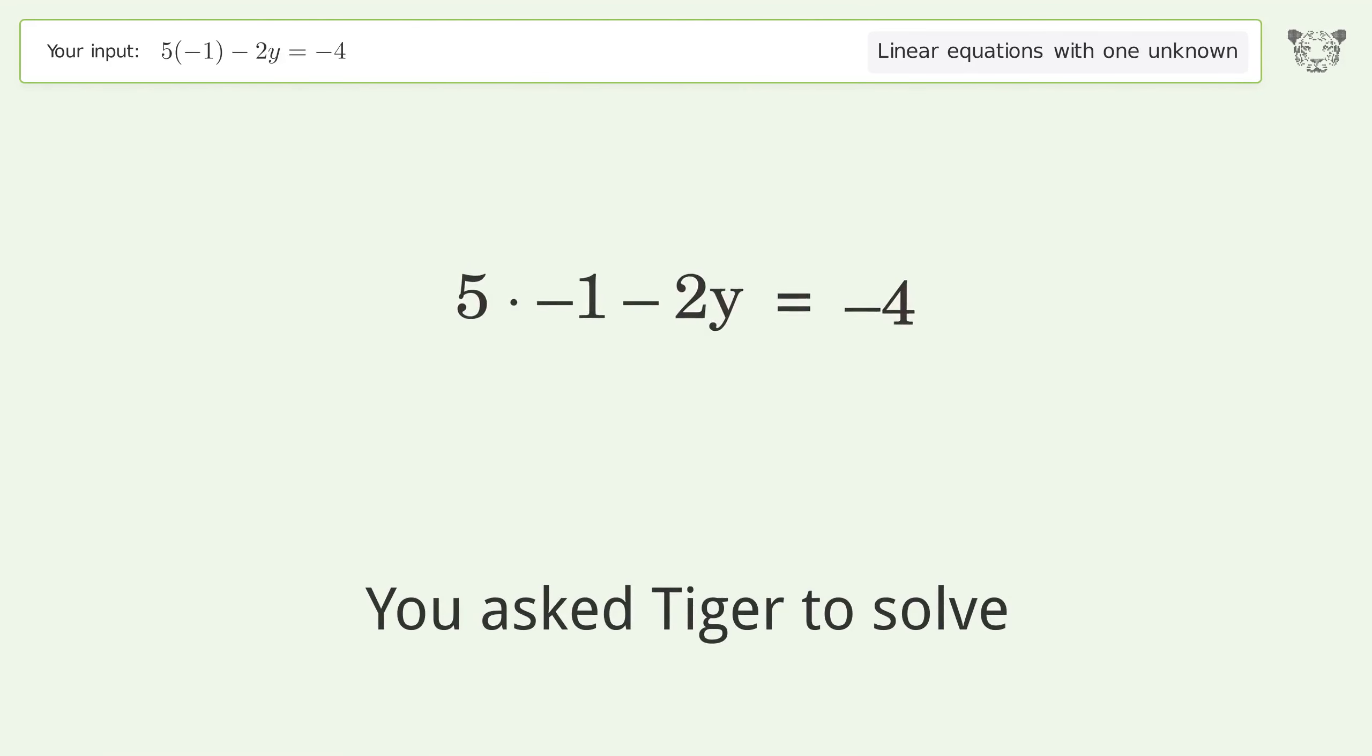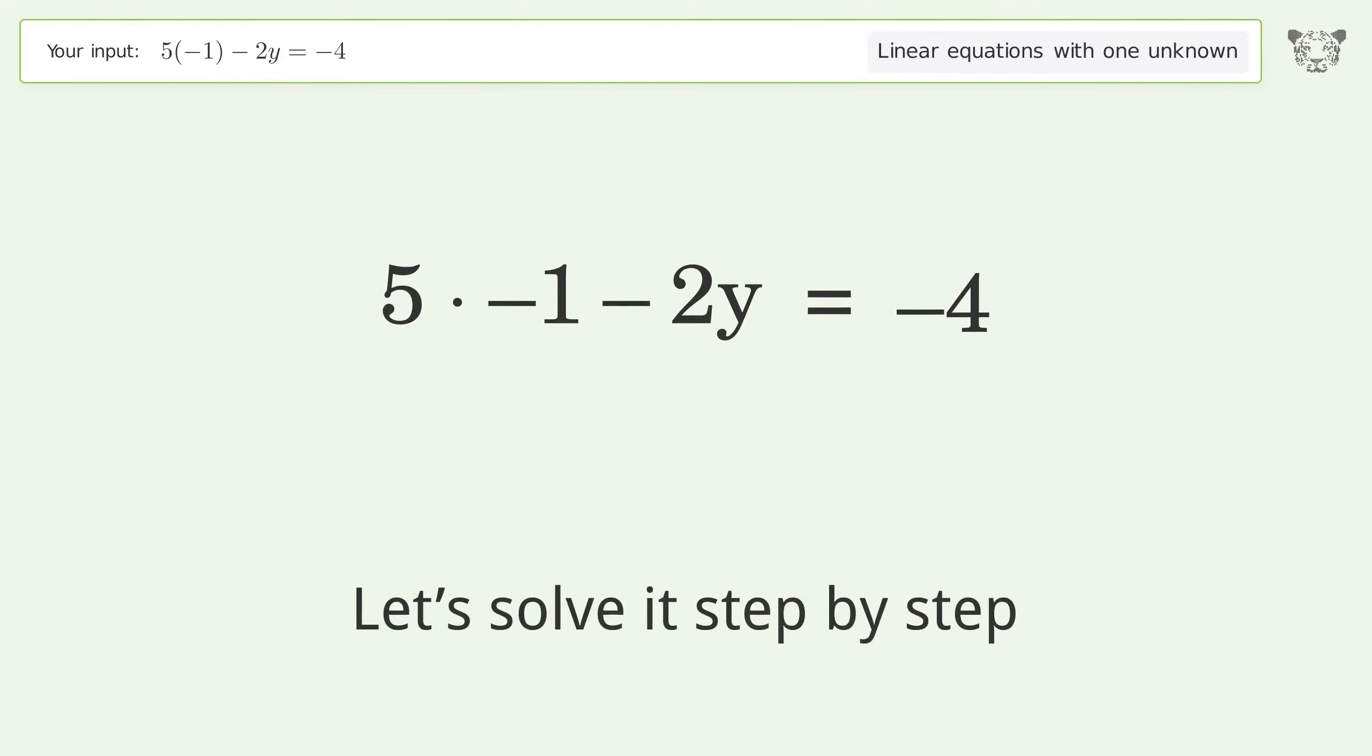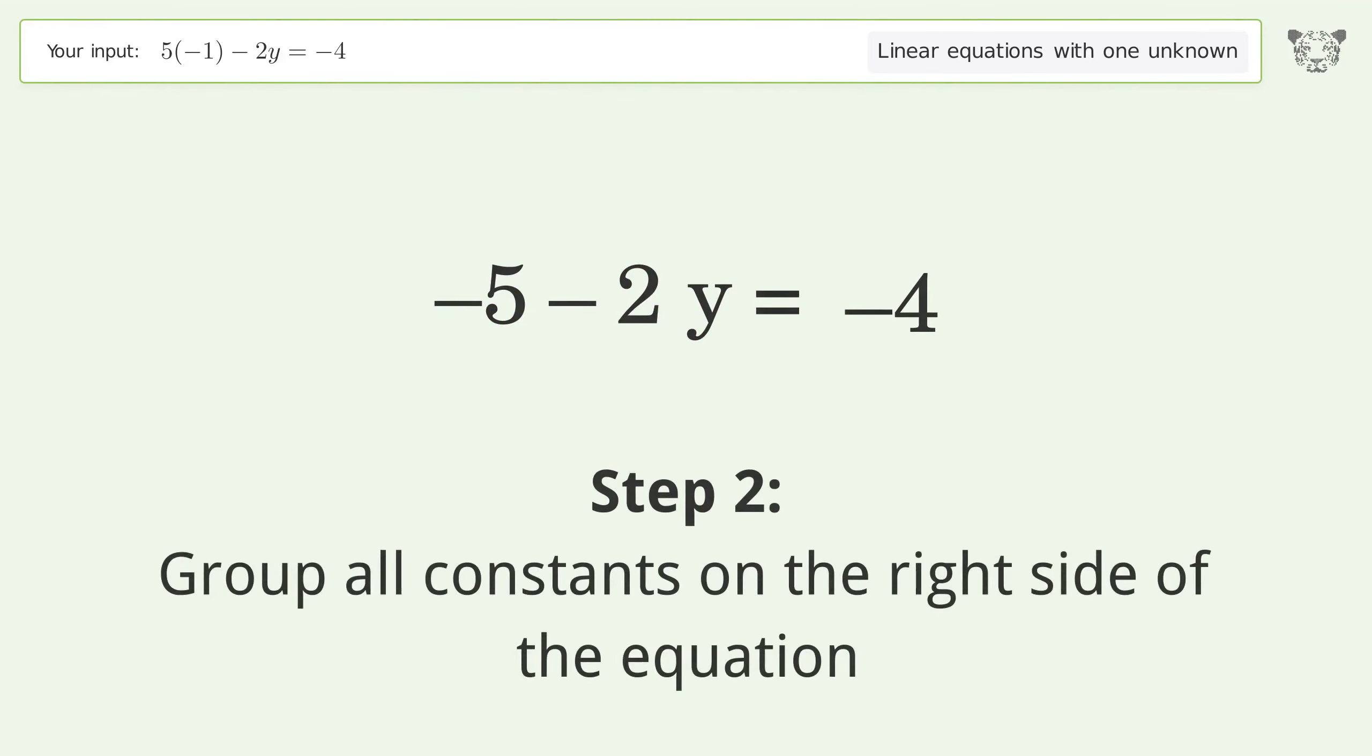You asked Tiger to solve this. It deals with linear equations with one unknown. The final result is y equals negative one over two. Let's solve it step by step. Simplify the expression. Group all constants on the right side of the equation.